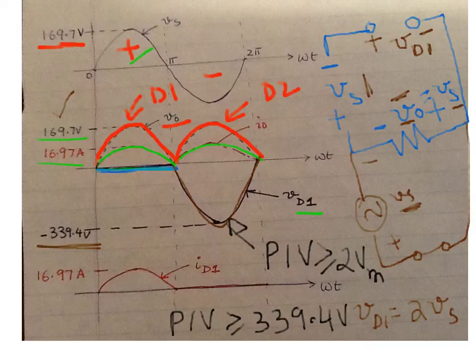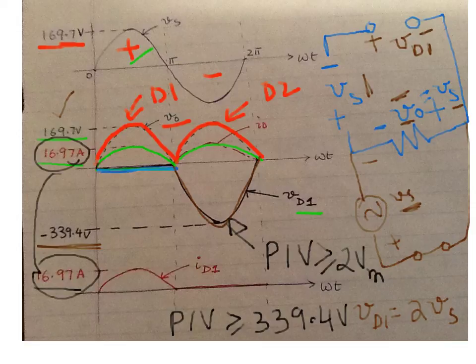If you look at the waveform for current, which is part of number seven from the question, I_d1 will be there when D1 is conducting, and I_d2 when D2 is conducting. Its shape is certainly sine, but its value is the same as the load current: 16.97 amperes here and 16.97 here. It's there during the positive half when conducting and zero when D1 is off.